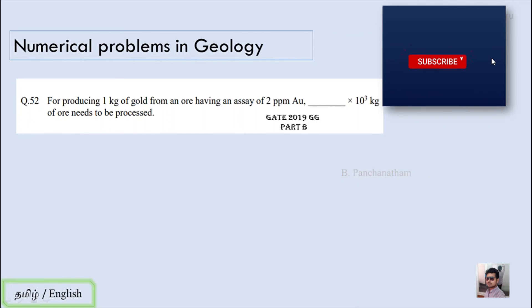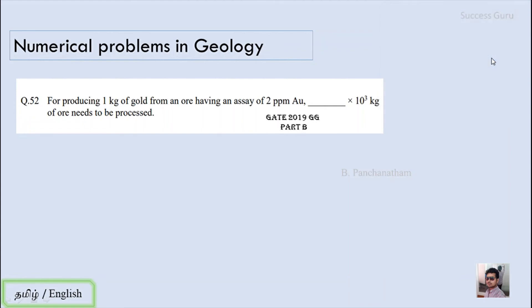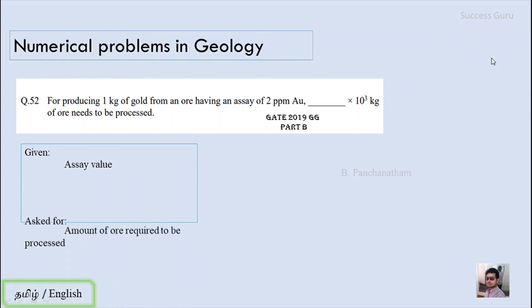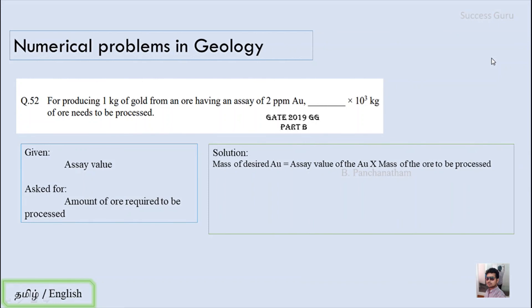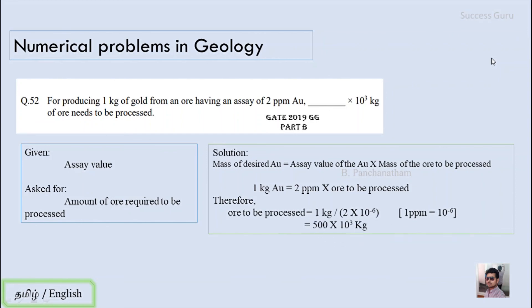The next question is from GATE 2019, Part B, question number 52. For producing 1 kg of gold from an ore body having an assay of 2 ppm, how many kilograms of ore need to be processed? In this question, the assay value is given as 2 ppm — parts per million — meaning if you separate 1 million grains, there will be 2 grains of gold. We are asked for the amount of ore required to be processed.